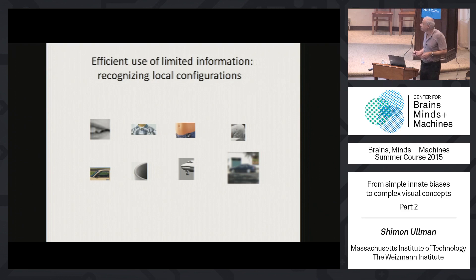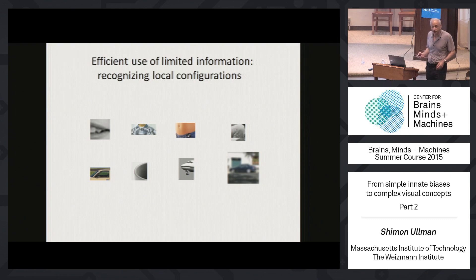This is some arbitrary collection — I guess you can recognize all of them. Some of them, if you think about a person or even a face, this is a very small part of a face. Everybody knows what it is. It's not even a recognizable, well-delineated part like an eye. You see a part of a person here and we know what it is.